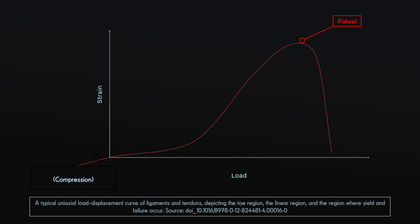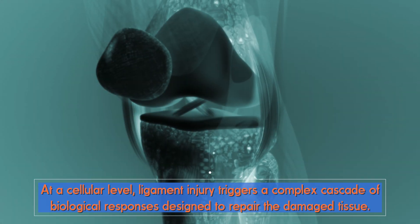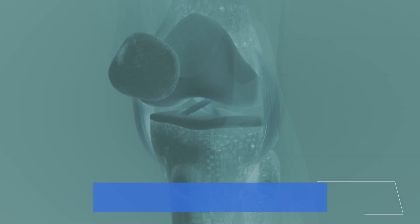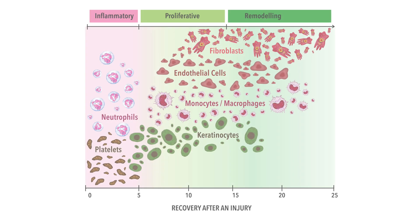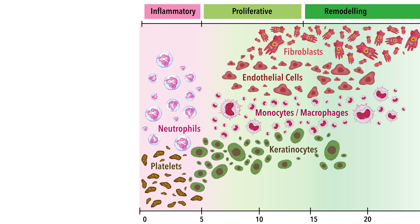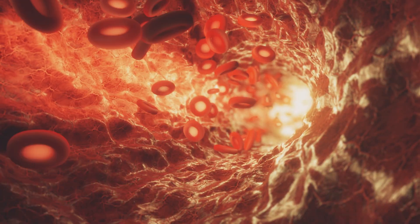Damage can range from mild stretching to partial or complete tearing. At a cellular level, ligament injury triggers a complex cascade of biological responses designed to repair the damaged tissue. The process broadly consists of three overlapping phases: inflammation, proliferation, and remodeling. The inflammatory phase starts straight after the injury and usually lasts for up to a week, and involves the release of lots of signaling molecules and an influx of inflammatory cells to the injury site.